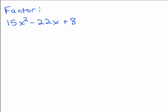Okay. Here's my tricky method. What you're going to do is use the product and sum idea, but the product is not the last number here. The product is you have to multiply the first coefficient times the last coefficient. So, the product is 15 times 8, which is 120.